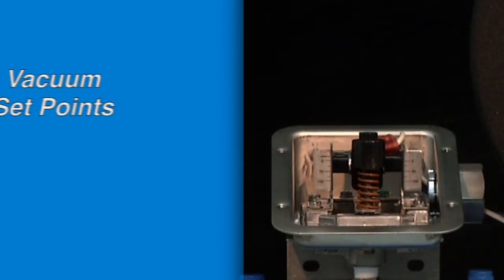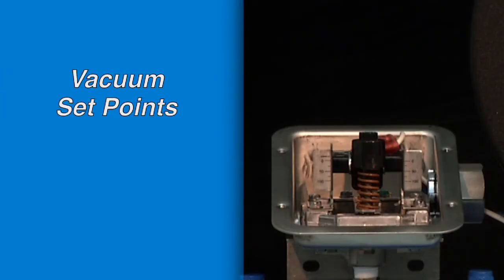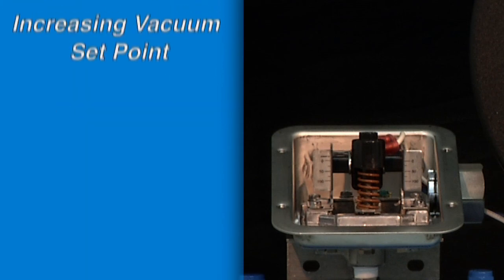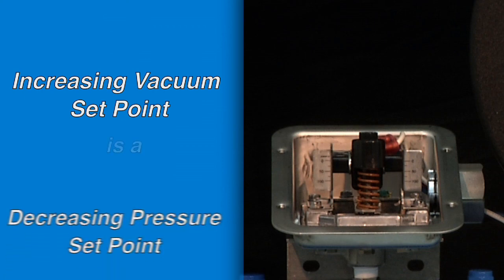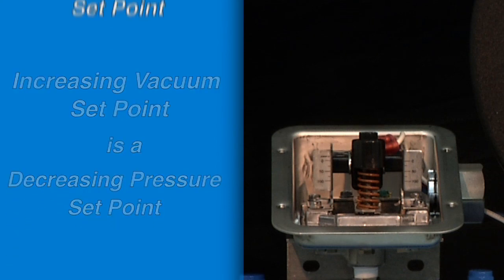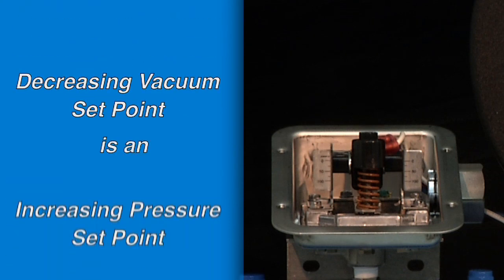For set points on vacuum range switches it is best to think of the set point as a negative pressure. So an increasing vacuum set point is a decreasing pressure set point and a decreasing vacuum set point is an increasing pressure set point.